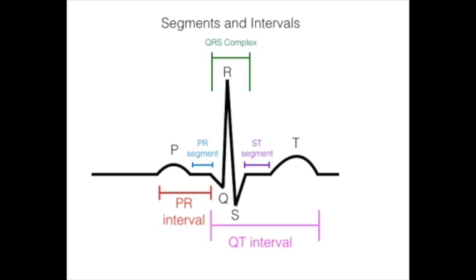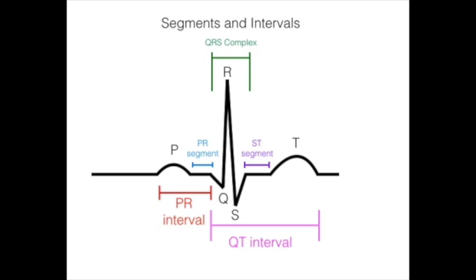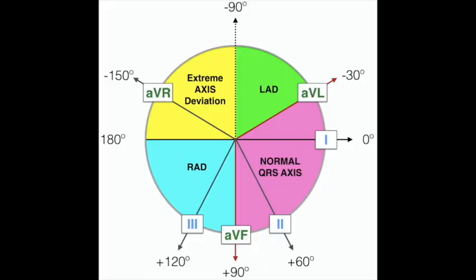For regular rhythm, use the 300, 150, 100, 75, 60, 50 method. For irregular rhythm, use the six-second strip R-wave count multiplied by 10. Step three: determine the QRS axis — looking at lead one and lead AVF.